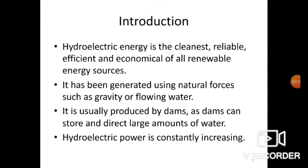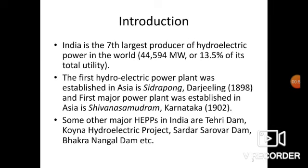Hydroelectric power has been generated using natural forces such as gravity or flowing water. It is usually produced by dams, as dams can store and direct large amounts of water. Hydroelectric power is constantly increasing in India. India is the seventh largest producer of hydroelectric power in the world. Some countries like Norway and Switzerland have developed 100% of their power from hydroelectric sources.